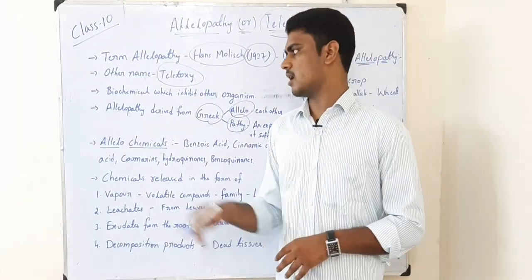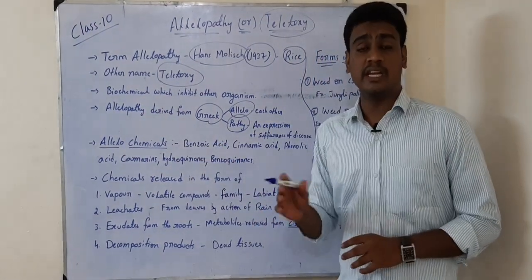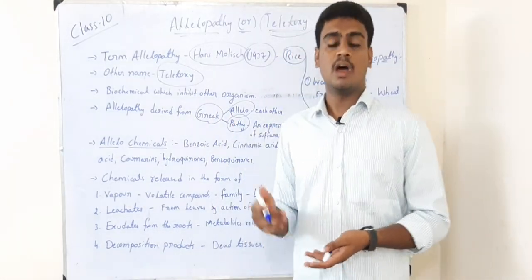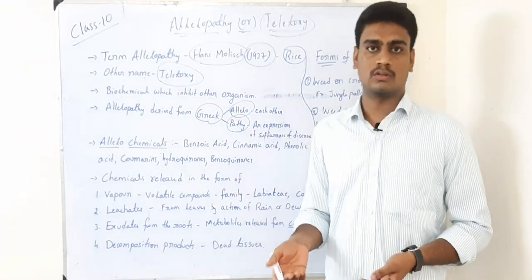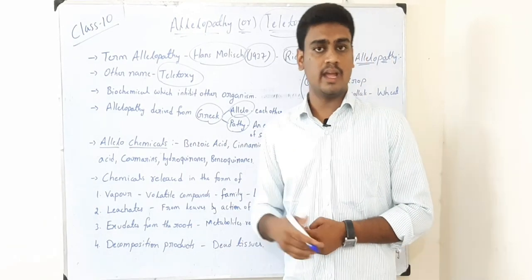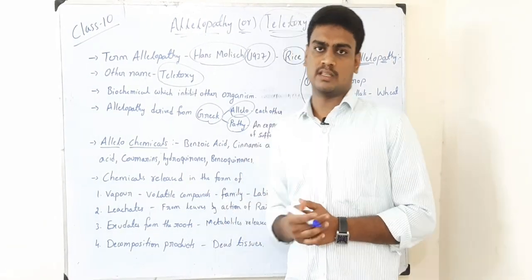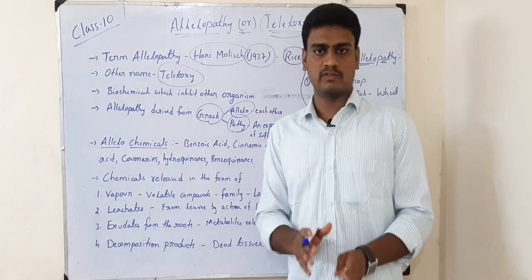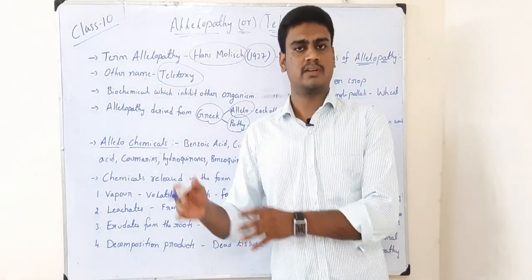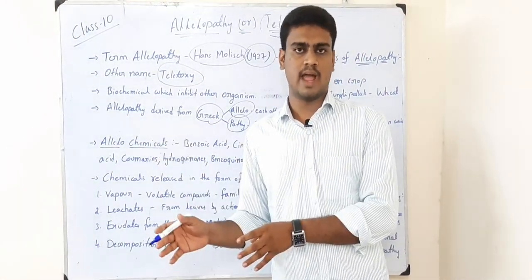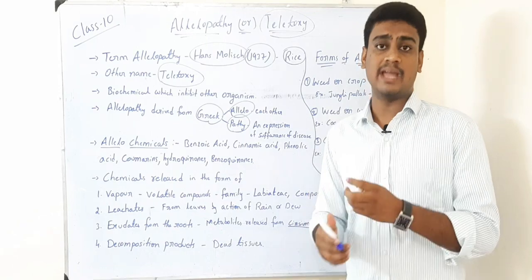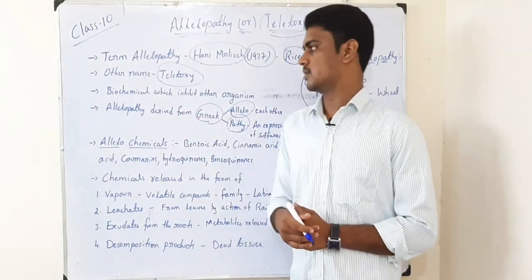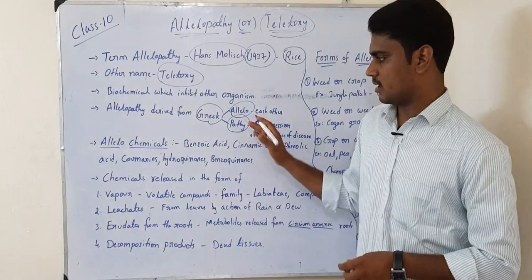Allelopathy is defined as any plant which produces a chemical substance or biochemical which inhibits other organisms — that means it may inhibit the germination or growth, or it may kill any other organism. One plant which inhibits the growth or development of another plant by producing some chemical substances or biochemicals is called allelopathy.